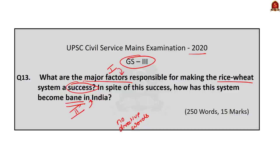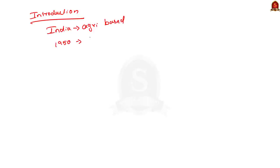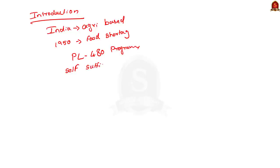Now let us start the answer discussion. For the introduction, we know India has always been an agricultural country. In the late 1950s, India faced severe food shortages and had to import wheat from the US under the PL480 program. It was an embarrassing situation for an agricultural country. So India decided to become self-sufficient in food grain production. Around the same time, Norman Borlaug developed a high-yielding variety of wheat, which India used to kickstart its Green Revolution.